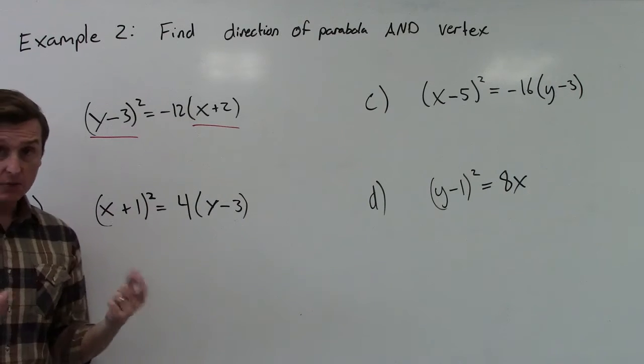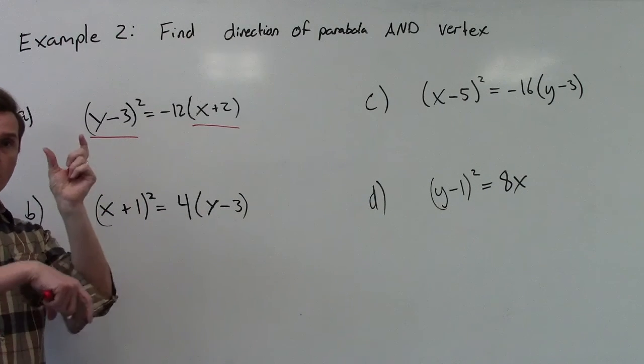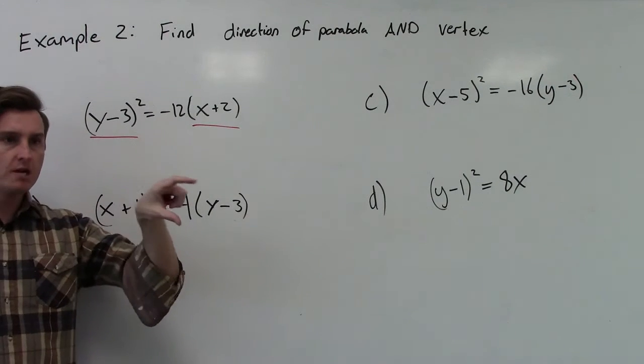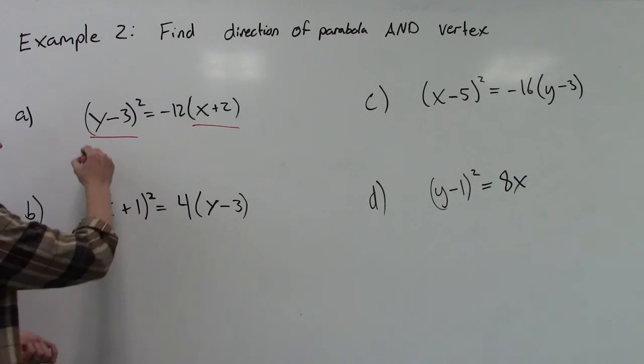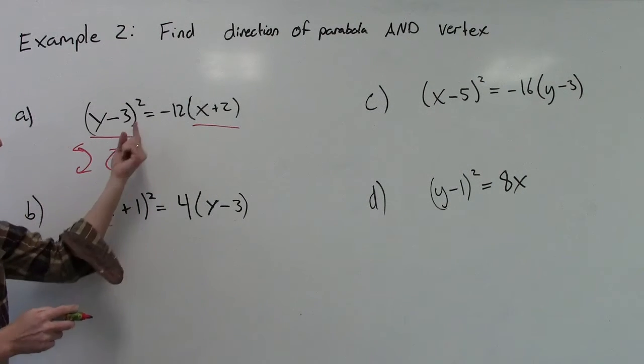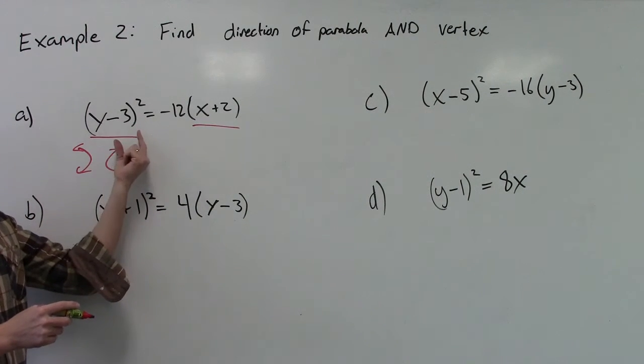Now most of the time, the parabolas that we've seen before have an x-squared in them, and they go up or down. In this case, if the y is squared, this is like a sideways parabola. This is going to open up either left or right. So those are our two options: either it opens left or right. And the reason for that is because the y variable is being squared, not the x.